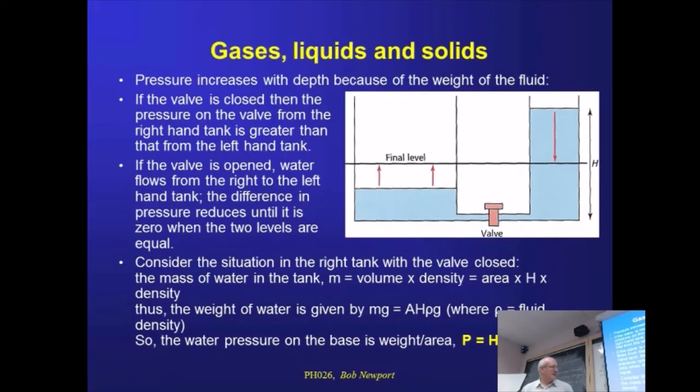So the weight of water then is going to be given by mg equals volume. So area times height times the density. So that gives us the mass of the water times g, acceleration due to gravity. But pressure, remember, is force per unit area. So we take out the A and we're left with height times density times g. So the pressure down here on this side of the valve is related to the height of the column multiplied by the density of the liquid multiplied by g.